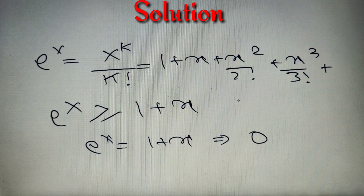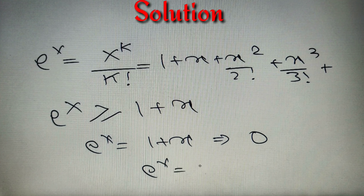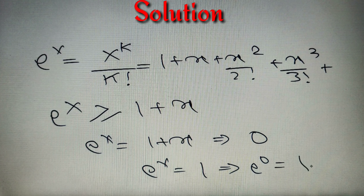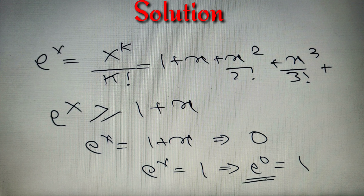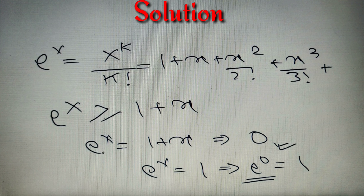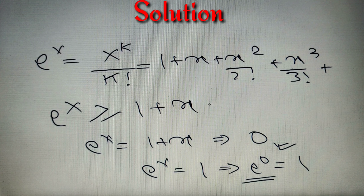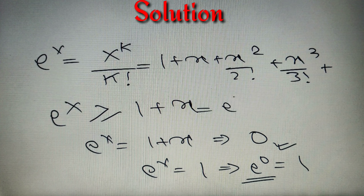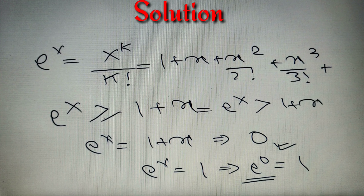If we put x = 0 into the series, we get e^0 = 1, which is indeed true. So at x = 0, e^x equals 1 + x. For all other values of x, we can write e^x is strictly greater than 1 + x.